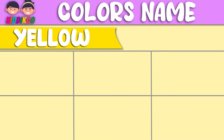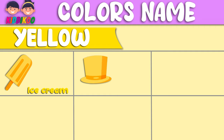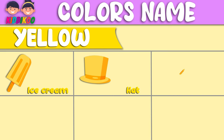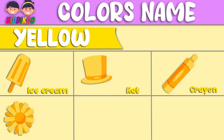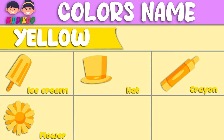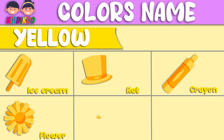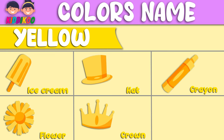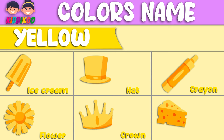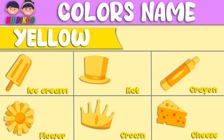This color is yellow. Ice cream — this ice cream is yellow. Hat — this hat is yellow. Crayon — this crayon is yellow. Flower — this flower is yellow. Crown — this crown is yellow. Cheese — this cheese is yellow.